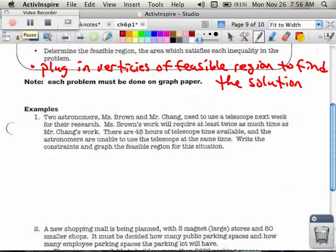Okay, so step one, we read the problem. It says there are two astronomers, Ms. Brown and Mr. Chang, and they want to use a telescope next week to do their research. Ms. Brown's work will require at least twice as much time as Mr. Chang's. There are 45 hours of telescope time total that's available. And the astronomers are unable to use the telescope at the same time. So then we're going to write the constraints that mimic this stuff.